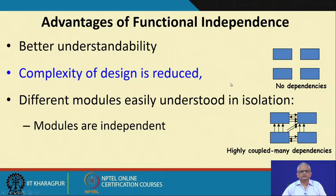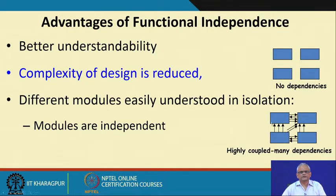With functional independence, we can easily understand the modules, and any error condition in a module is isolated. If we find that the system as a whole is not functioning or there is an error, we can easily identify it. But if modules are heavily dependent on each other, we will have to keep tracing execution sequences, possibly going round and round without being able to determine the error. The advantages of functional independence are that the complexity of the design is reduced, and it becomes easy to maintain and debug.